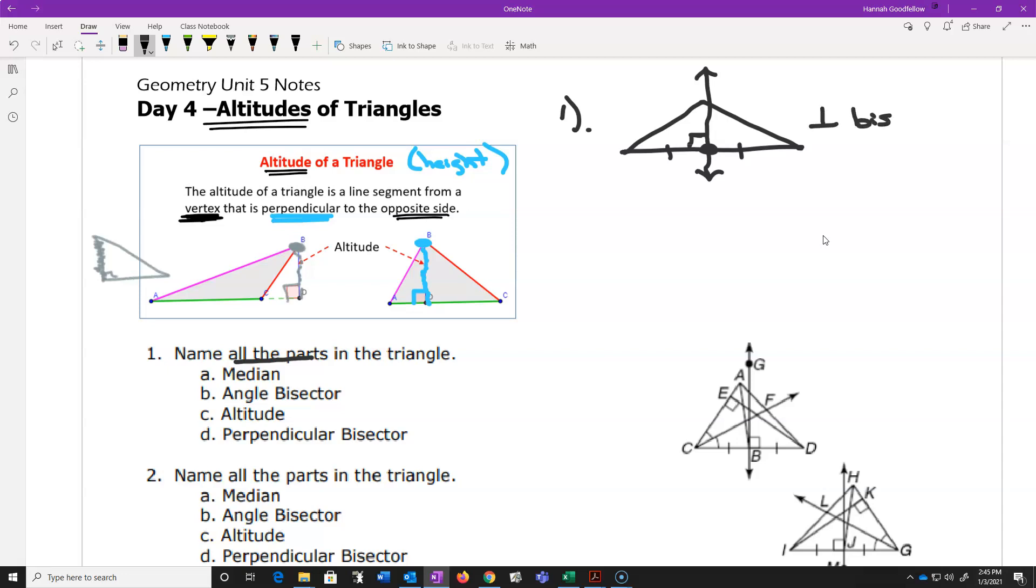So, perpendicular bisectors have these kinds of notation on them. Now, note that I showed that it doesn't have to go through the vertex. They don't. They are not connected in any way to have to go through the vertex. All the other ones do, but anything that misses the vertex on the other side has got to be a perpendicular bisector of some sort.